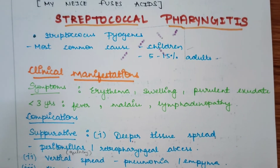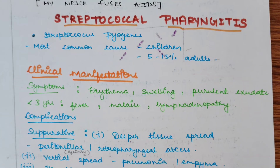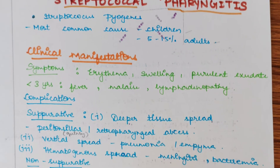Hello friends, today we will learn about Streptococcal Pharyngitis. It is caused by Streptococcus pyogenes and is the most common cause of bacterial pharyngitis in children. It is also seen in 5-15% of adults in clinical manifestations.